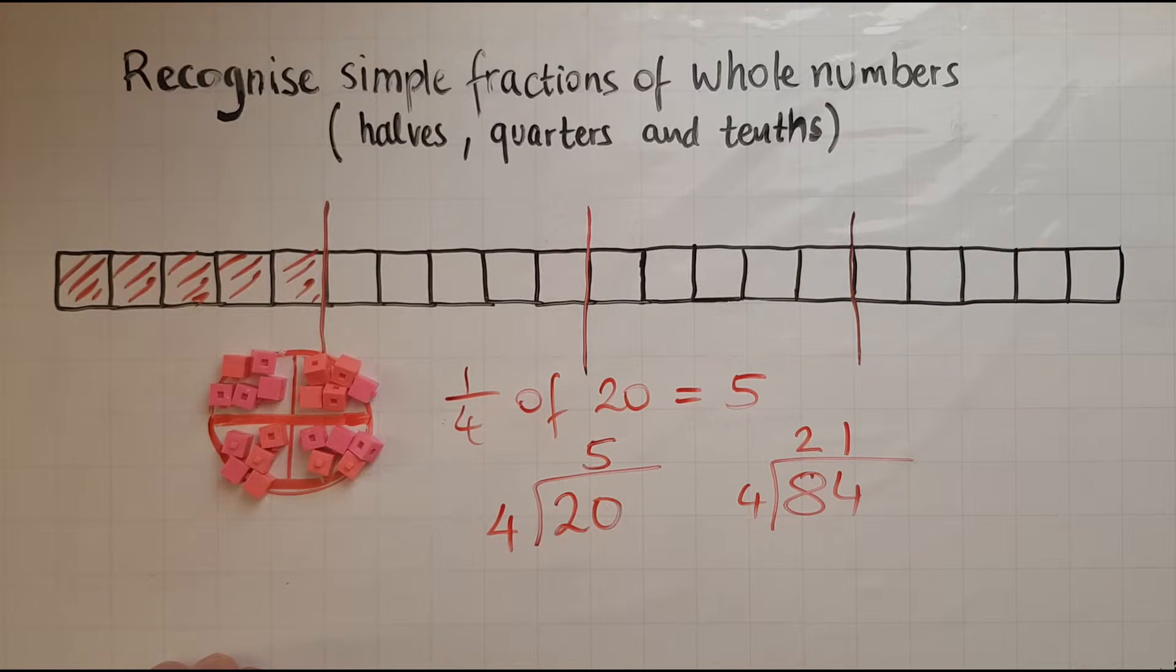And let's try 96 divided by 4. How many 4s fit into 9? That is 2 of them. So we have 1 left. How many 4s into 16? That is exactly 4. So my answer would be 24.